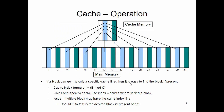If a block can go only into a specific cache line — which is what direct mapping means — then it is easy to find the block. We calculate the index i, go to that cache line, and check it. Since i is computed using the modulus operation, multiple addresses can be mapped into one single cache line. In this picture, for example, addresses like 1, 5, 9 can all be mapped into one blue cache line in the cache memory.